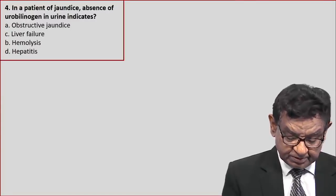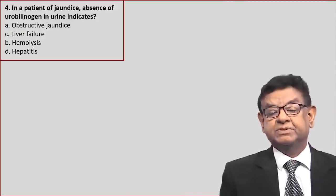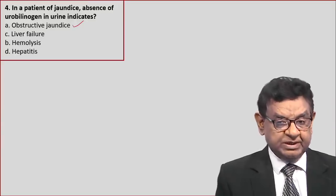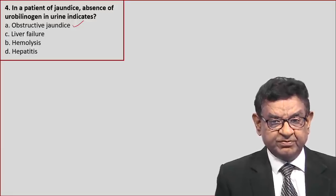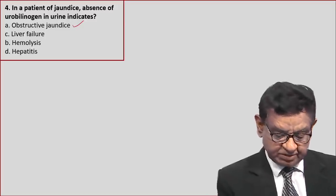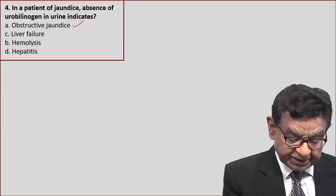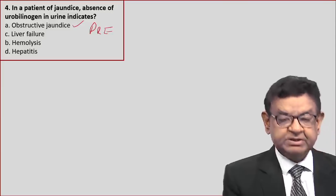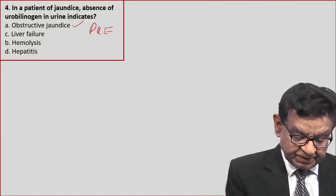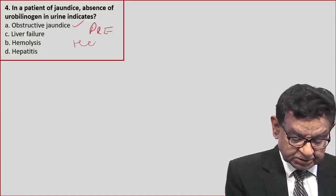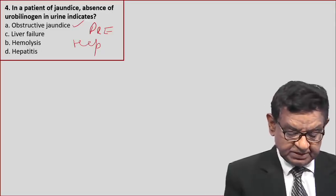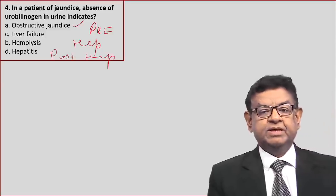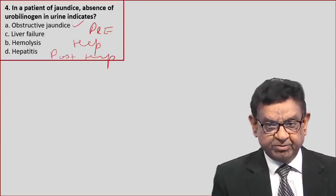Question number 4: in a patient with jaundice, absence of bilirubin and urobilinogen in the urine indicates obstructive jaundice. Let us see the findings in different types of jaundice. Jaundice is classified into three categories: prehepatic — typically due to any cause of hemolytic anemia; hepatic — typically occurs in hepatitis; and posthepatic — typically due to gallstone and carcinoma of the head of pancreas.